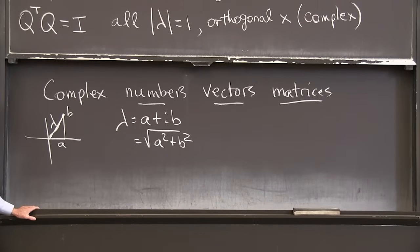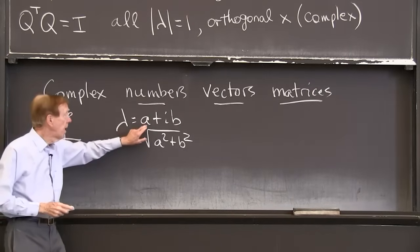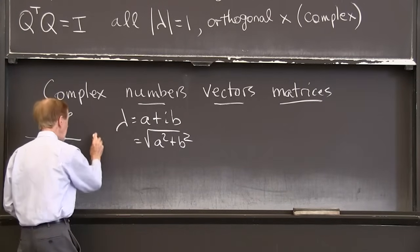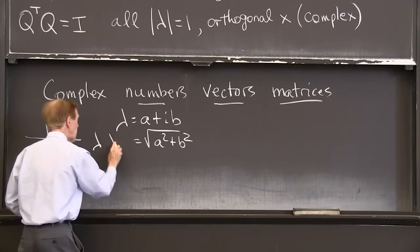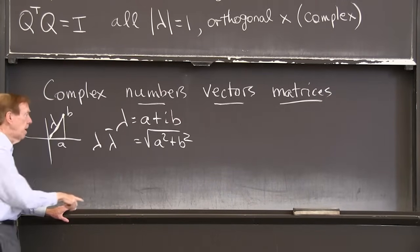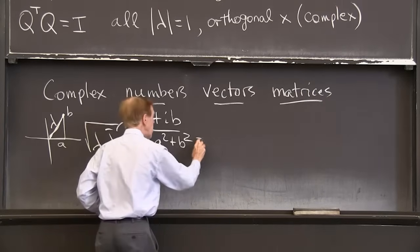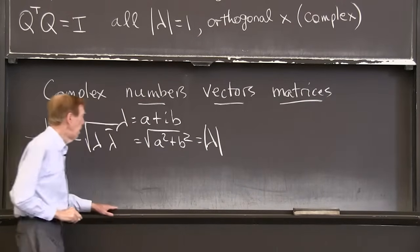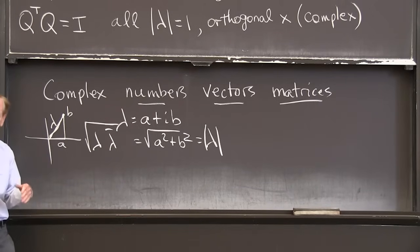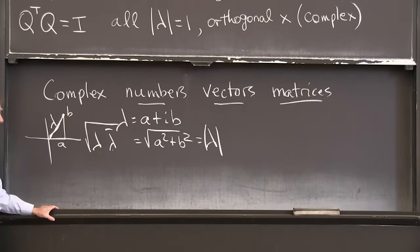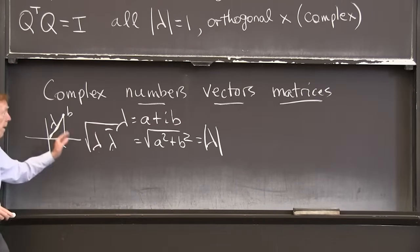Notice how do I get that number from this one? It's important. If I multiply a plus ib times a minus ib, so I have lambda, that's a plus ib, times lambda conjugate, that's a minus ib. If I multiply those, that gives me a squared plus b squared. So I take the square root. This is what I would call the magnitude of lambda. So the magnitude of a number is that positive length, and it can be found. You take the complex number times its conjugate, that gives you a squared plus b squared, and then take the square root.